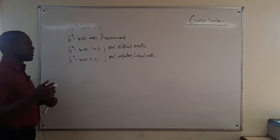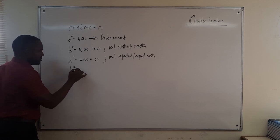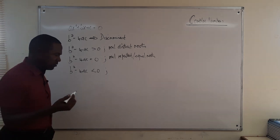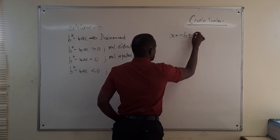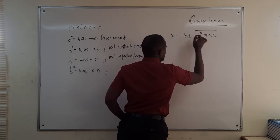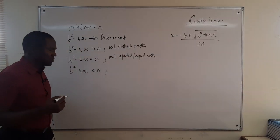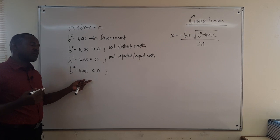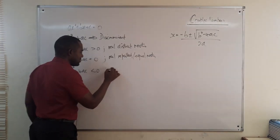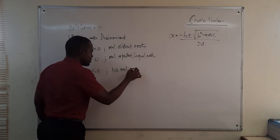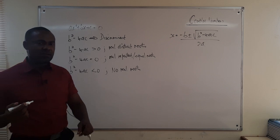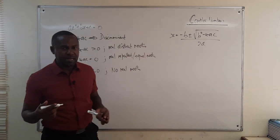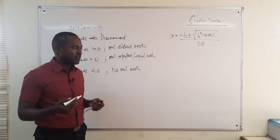The most important case relating to complex numbers is where b squared minus 4ac is less than zero — the discriminant is negative. In the quadratic formula, x equals minus b plus or minus the square root of b squared minus 4ac, all over 2a, the discriminant appears under the square root. When it's negative, we said the equation had no real roots, because the square root of a negative number is not real and gives an error on the calculator.